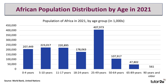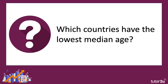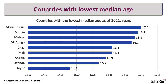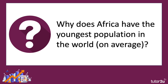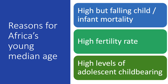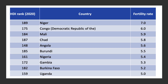Here's Africa's population distribution by age in 2021. The countries with the lowest median age are in Africa: Niger at under 15, Uganda at 15.7, and Angola at just under 16, as of 2022, drawing on data from the United Nations and the Royal Bank. Why does Africa have the youngest population in the world on average? It's the result of a combination of factors: high but falling child and infant mortality, a very high fertility rate (the number of children born to women of childbearing age), and extremely high levels of adolescent childbearing. The fertility rates for 2020 show Niger and DRC well ahead of the rest — all of these countries have a female fertility rate in excess of five.